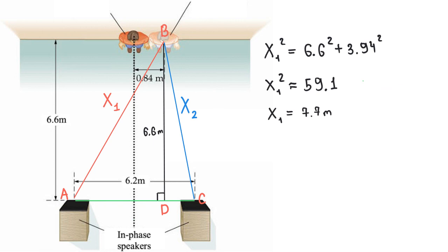Similarly, we can find the value of x2 and x2 is equal to 7 meters.